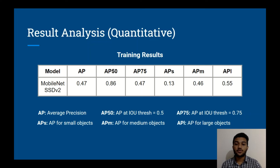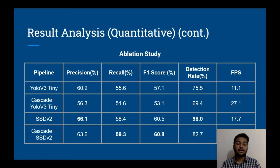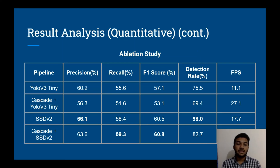Here we can see the training results for MobileNet SSD V2 with average precision at different IOU thresholds. In the ablation study, YOLO V3 Tiny gave a decent detection rate but very low frames per second. Using the Cascade classifier as a filter — passing only frames containing license plates to YOLO V3 — improved FPS significantly, but detection rate and F1 score were still unsatisfactory. Switching to MobileNet SSD V2 as the backbone achieved a detection rate of 98%, but FPS was still insufficient. Adding the Cascade classifier as a filter on top of SSD V2 achieved real-time inference speed with an F1 score of 60.8 and a detection rate of 82.7.